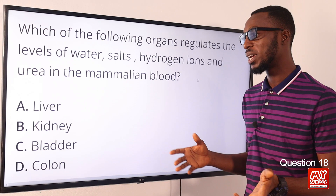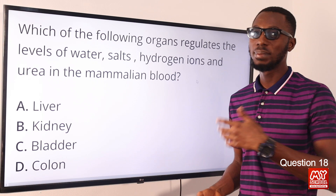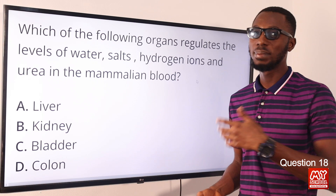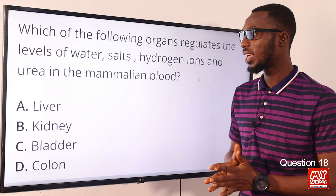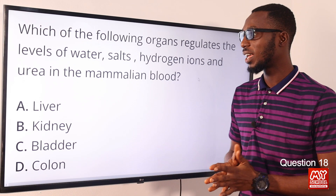When we look at the functions of the liver, we talk about carbohydrate metabolism, protein metabolism, lipid metabolism, production of bile, storage of vitamins and minerals, and detoxification. The functions of the kidney include removal of nitrogenous waste, and the control or regulation of the levels of water, salt, hydrogen ions - referring to acidic level - and urea in mammalian blood.